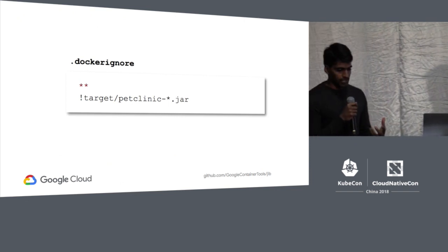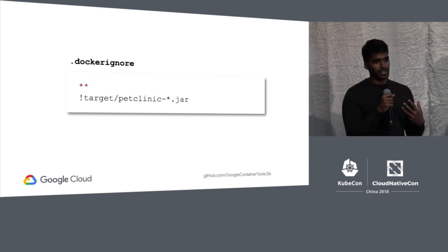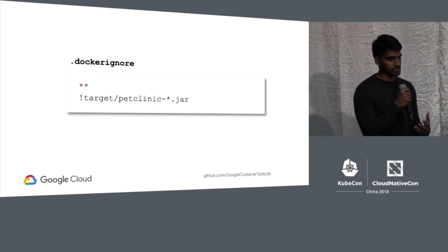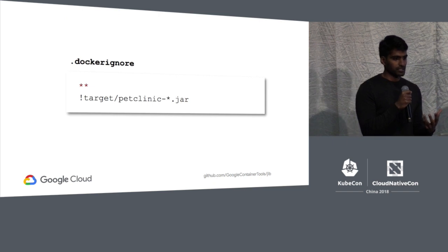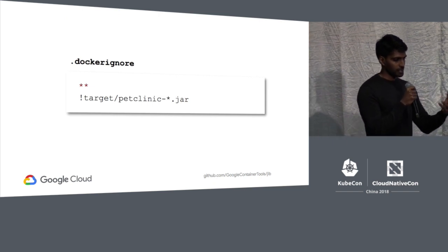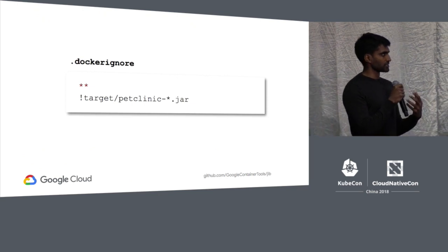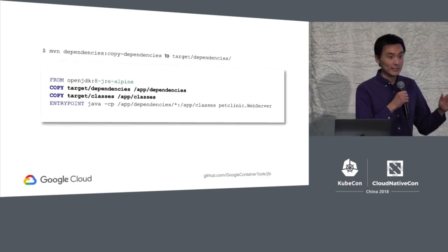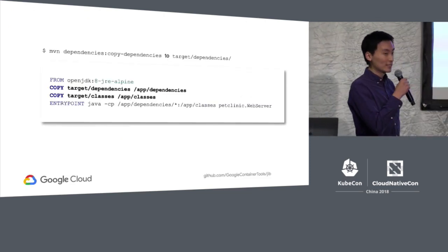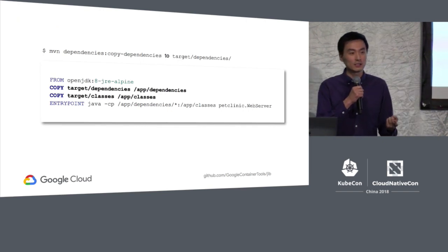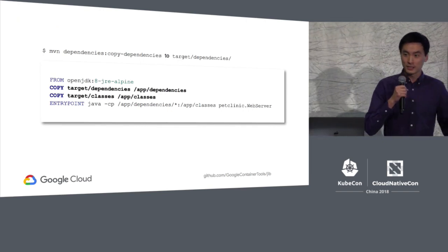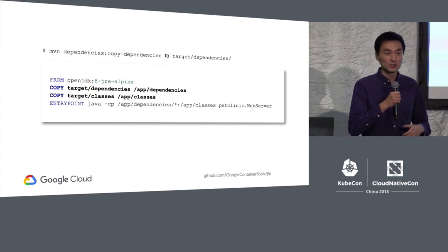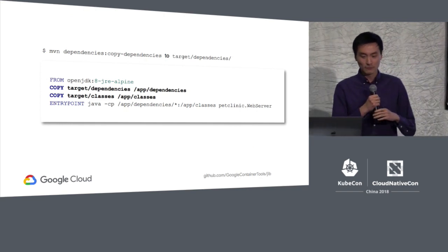In our Dockerfile we had a single line for our whole application. Every time you change anything, you have to rebuild the jar, put it in your container, and send that container to the registry. But Docker has layers, and maybe we can split our application into separate layers to focus all our changes in a single layer. After researching Docker layering, I write a better Dockerfile that splits the application into two layers: one for dependency jars and one for class files. Now when I only change class files, the only layer resent is the smaller classes layer.